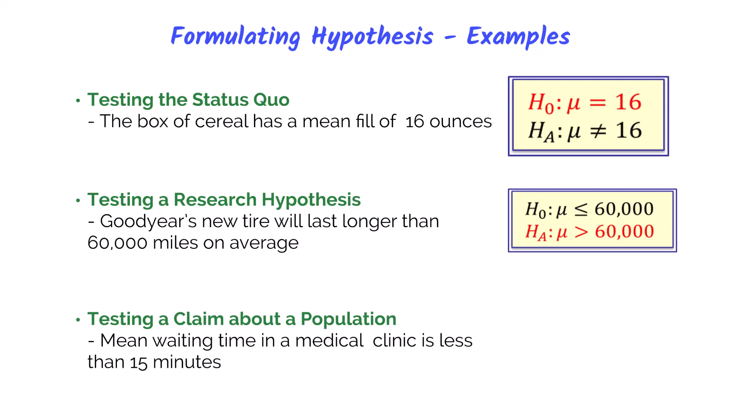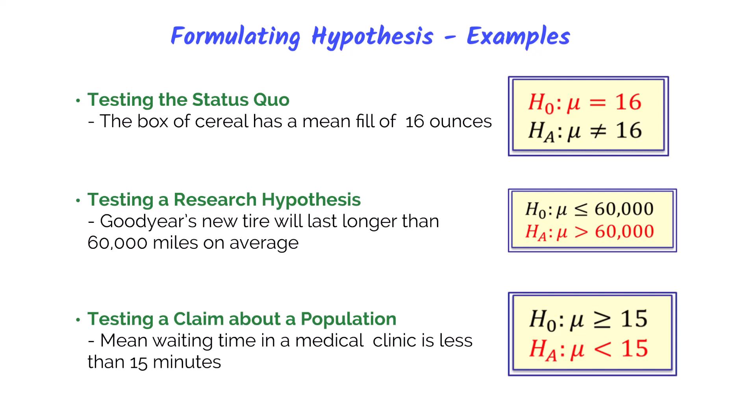Sometimes companies want to test a claim. If the stated claim includes the equality in the story, it's going to be the null hypothesis. If it doesn't include the equality, then it's going to be the alternative hypothesis. For instance, a medical clinic claims the wait time is less than 15 minutes. Since 'less than' does not include the equality sign, this is going to be the alternative hypothesis. The medical clinic will want to test if this claim is true, as we don't want people waiting too long.